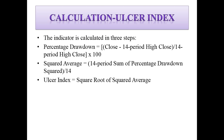Then you'll have to calculate the squared average. For this you'll need the 14-period sum of percentage drawdown and divide that by 14. Next, you'll also have to calculate the Ulcer Index itself — for this you take the square root of the squared average, and that gives you the Ulcer Index.